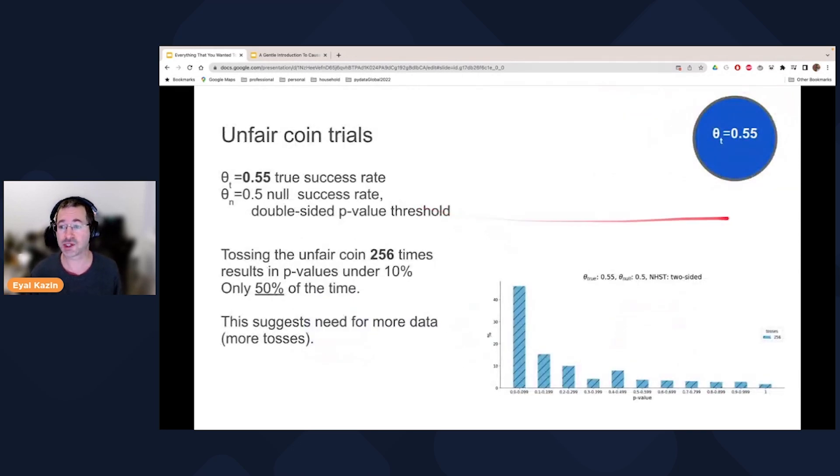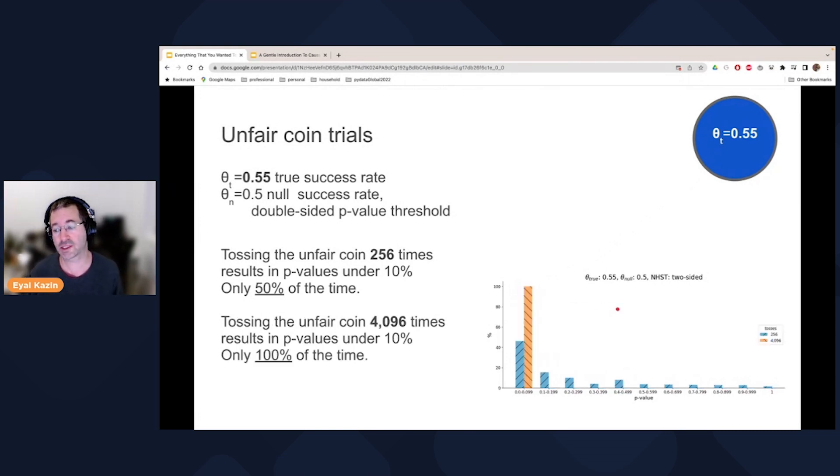And so we're going to start with the unfair coin, so we do thousands of experiments, in each experiment we toss a coin 256 times now, and then we get for each series of 256 we get one p-value, but we do this thousands of times, and so I can draw this distribution. What I did is I bin the p-values into bins of 10%, so between 0 to 10%, 10 to 20%, etc. And so what you can read here is that if you toss a coin 256 times the probability of rejecting the null hypothesis, which is the correct thing to do, you can do that only 50% of the time. What's the solution? Well, either make a decision with low confidence, or just if you get more budget, you can collect more coins.